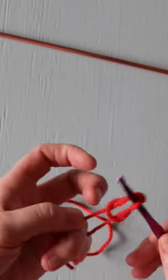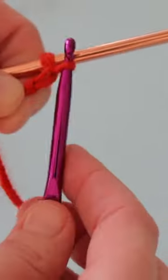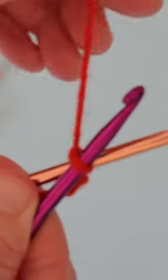Start by making a slipknot and putting it on a crochet hook. Put your crochet hook over knitting needle on an X, bring your working yarn behind the needle, draw over a loop, and pull it through the original slipknot.